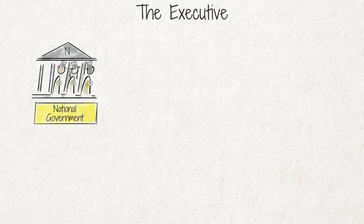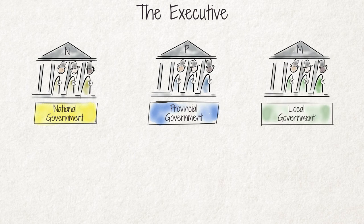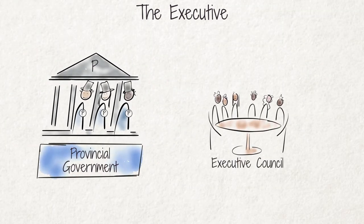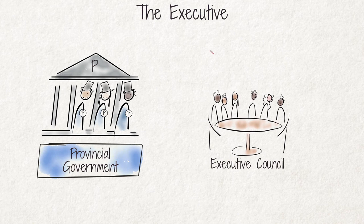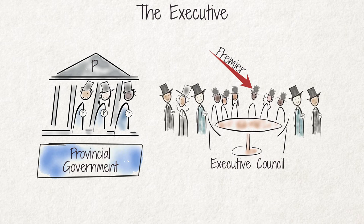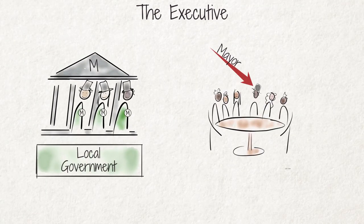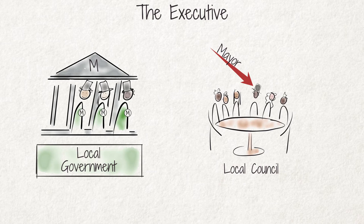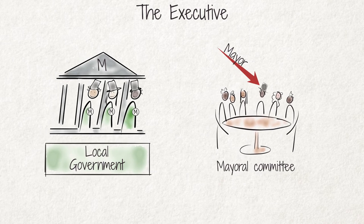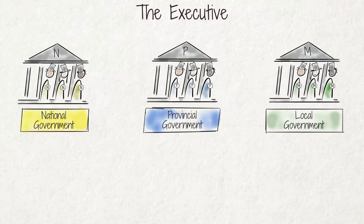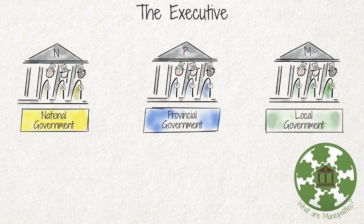While the national executive deals with issues concerning the whole country, there is also a provincial executive for each province and a local executive for each town or city. The provincial executive is known as the executive council, headed by the premier of the province and including 10 provincial members of the executive council who act as provincial ministers. At local level, each municipality is headed by a mayor elected by the local council, assisted by the mayoral committee within the executive.